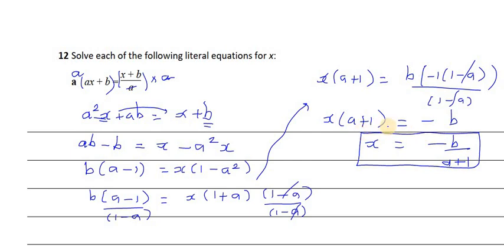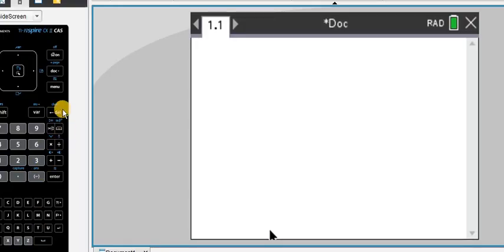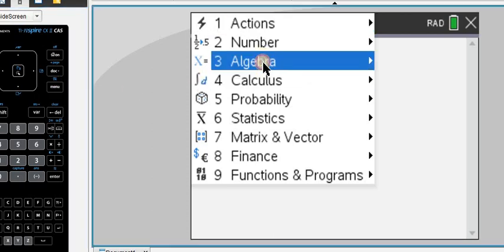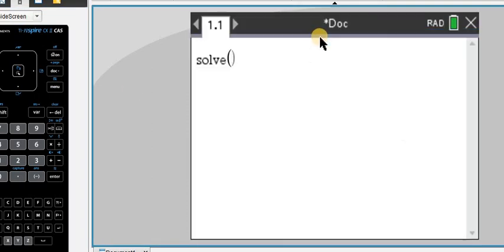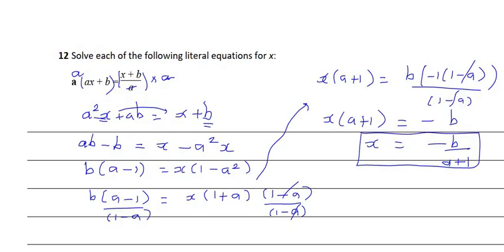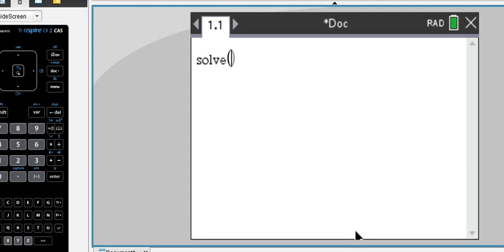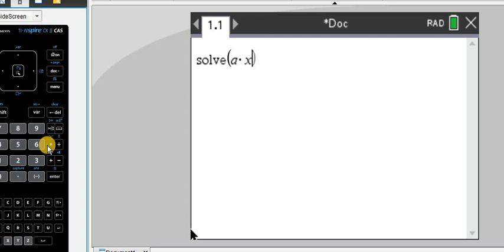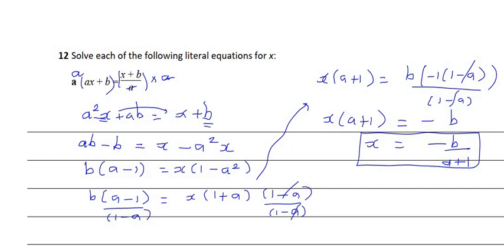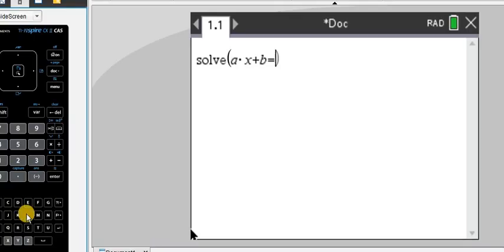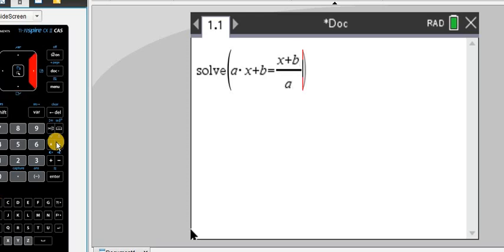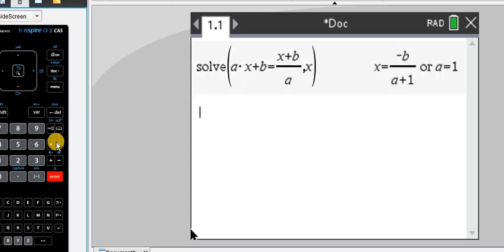Let me show you how you can do this on the CAS calculator. You can go Menu, Algebra, Solve. The question is ax + b, so you can type in a times x plus b equals—the right hand side is x plus b over a. So I'll bring the fraction key, x plus b over a, and you're solving for x. This is the answer.